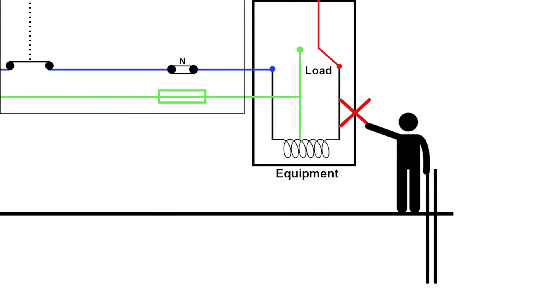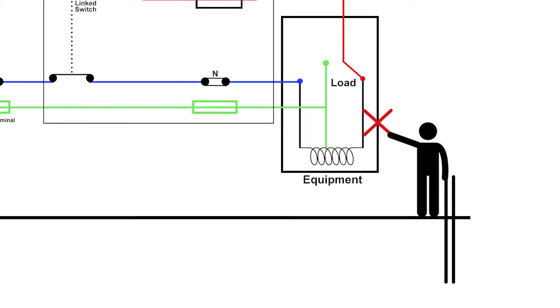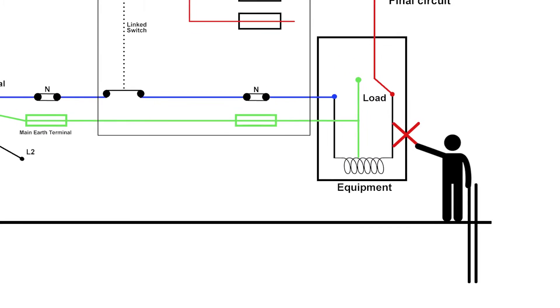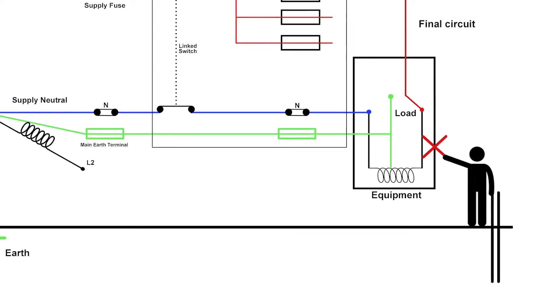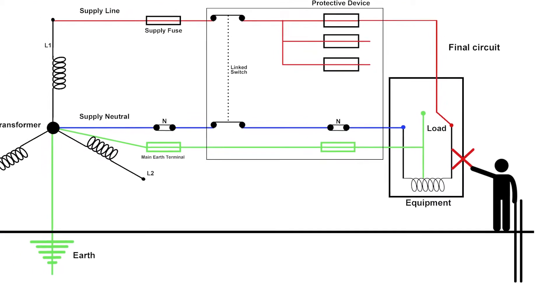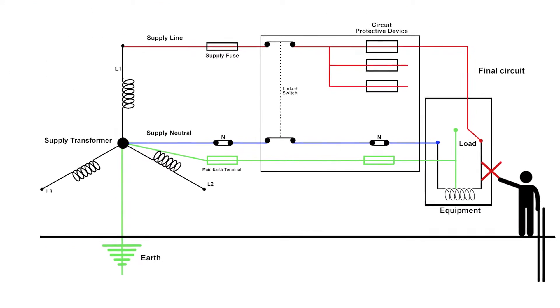current could pass across my chest and flow to earth because that's a nice easy path for it to flow. I know that if I get a current across my chest, the likelihood is it's going to kill me. So I need to have something in place to prevent that from happening. That's why we have an earthing system. It's important that my earthing system has a low enough resistance so that enough current can flow to operate this protective device.